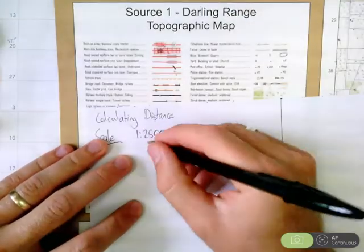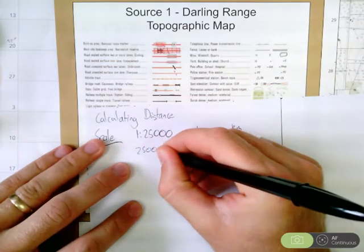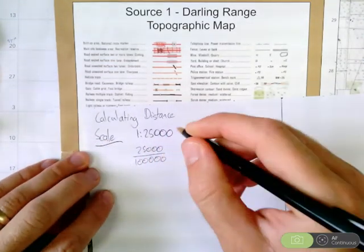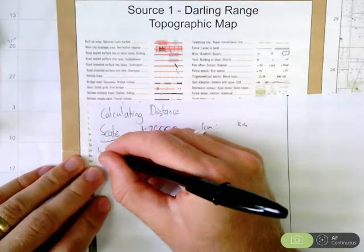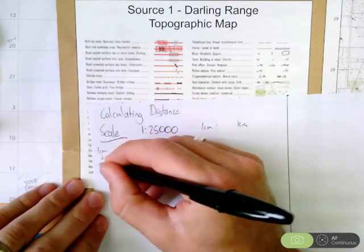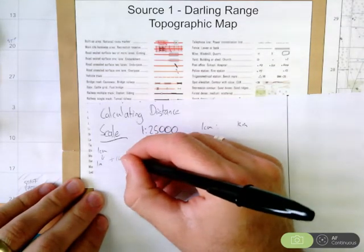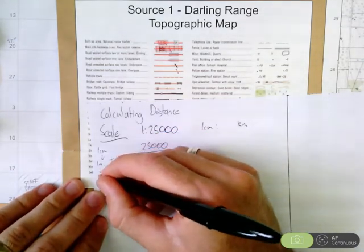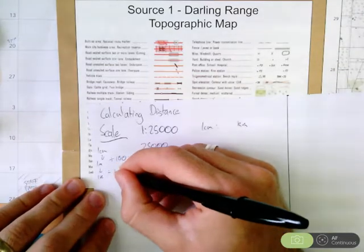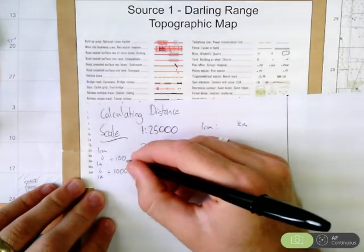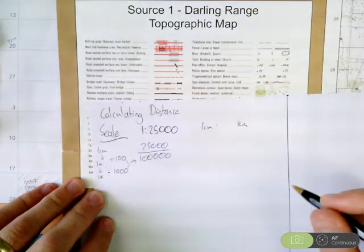If we do 25,000 divided by 100,000. Why 100,000? Because 1 centimetre to 1 metre is divided by 100. 1 metre to 1 kilometre is divided by 1,000. So together we have divided by 100,000.